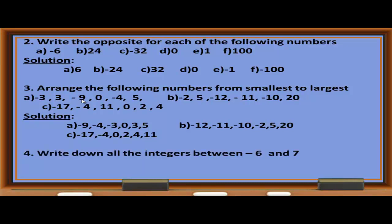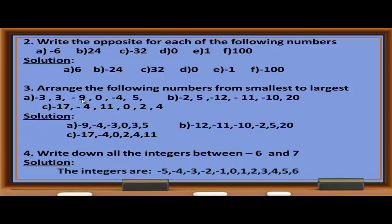Exercise 4: Write down all the integers between negative 6 and 7. The integers between negative 6 and 7 are: negative 5, negative 4, negative 3, negative 2, negative 1, 0, 1, 2, 3, 4, 5, and 6.